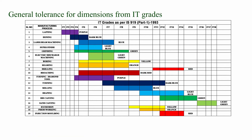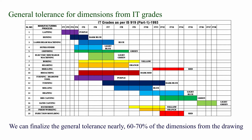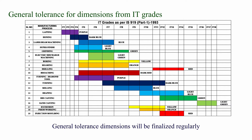We are going to see general tolerance for dimensions from IT grades. To select general tolerance for dimensions from IT grades, we can finalize the general tolerance for nearly 60 to 70 percent of the dimensions from the drawing. The remaining 20 to 30 percent will be critical dimensions, and their tolerance will be part of a stack-up analysis. General tolerance dimensions will be finalized regularly.